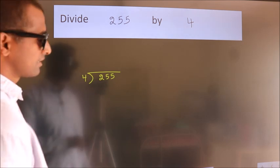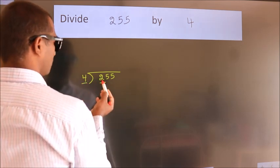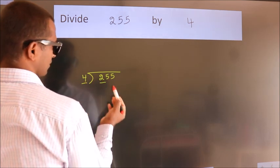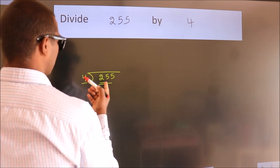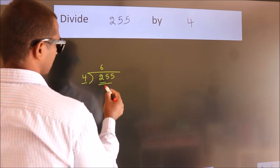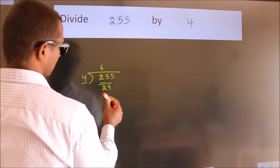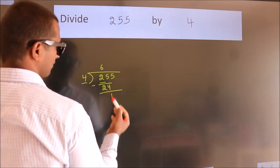Next. Here we have 2. Here 4. 2 is smaller than 4, so we should take 2 numbers: 25. A number close to 25 in the 4 table is 4 times 6 equals 24. Now we should subtract. We get 1.